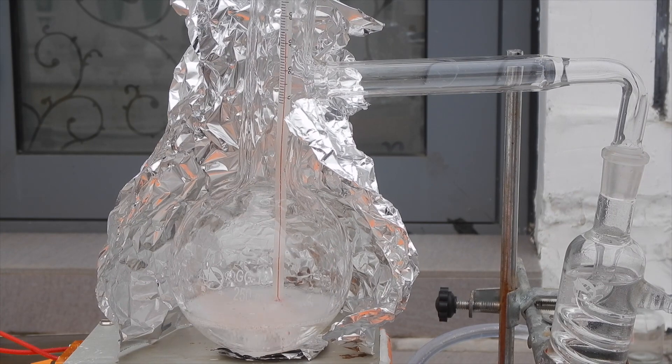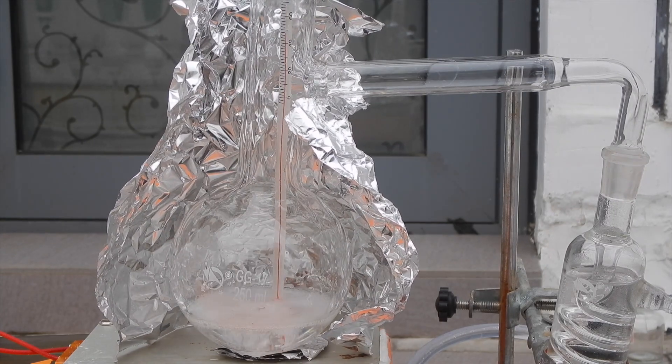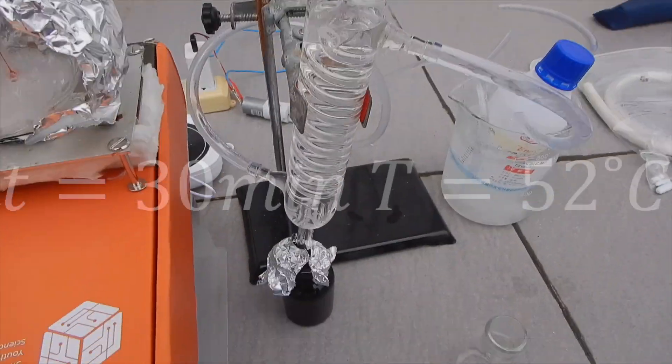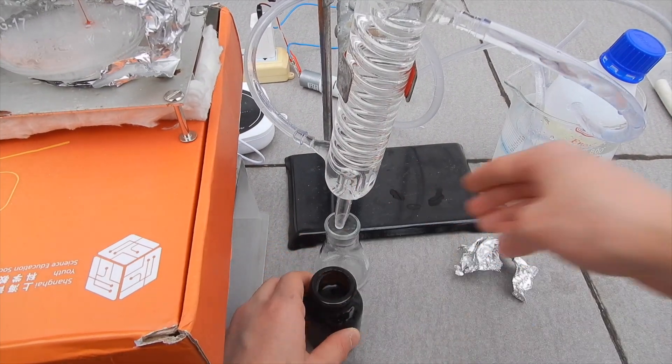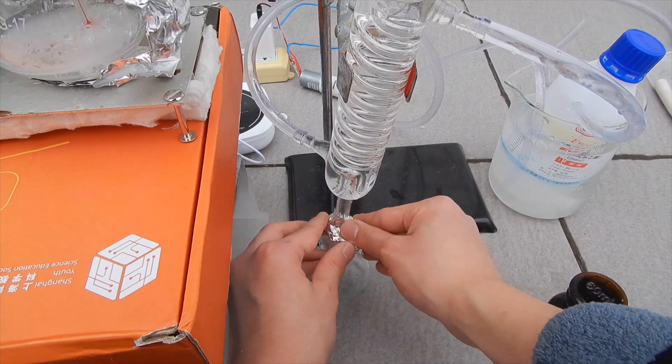However, I didn't observe the sudden temperature spike. Probably my car starter fluid has other low boiling point ingredients. When the temperature reaches 52 degrees Celsius, I decided to swap out the receiving flask. I wrapped the mouth of the flask in aluminum foil to reduce evaporative losses.